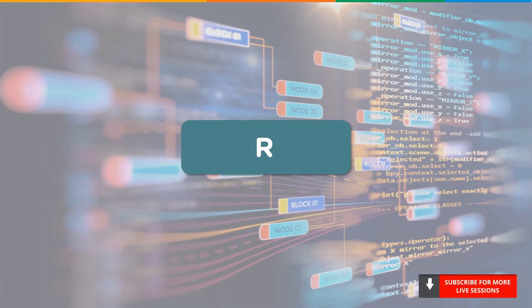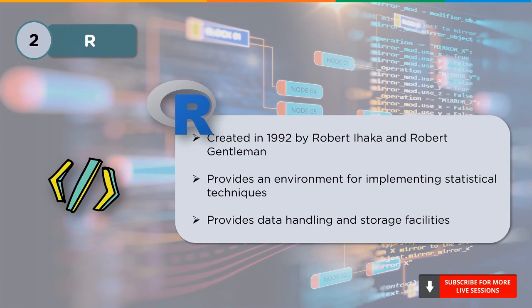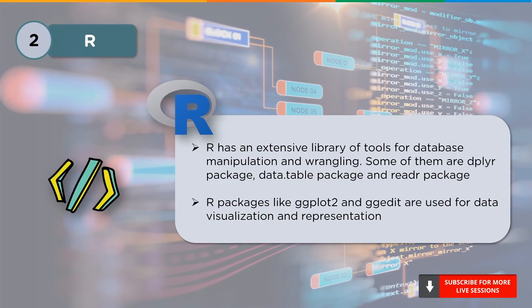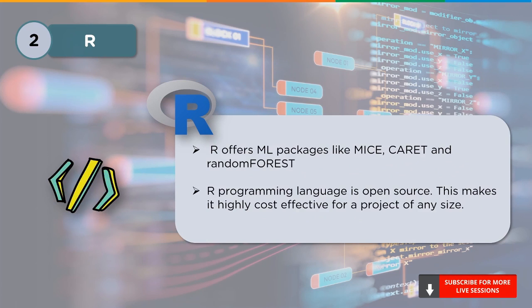At number 2, we have R. It was created in 1992 by Robert E. Haka and Robert Gentleman. It provides an environment for implementing statistical techniques along with data handling and storage features. It offers a wide range of packages and libraries and can be compiled on Unix, Windows, and macOS platforms. R has an extensive library for manipulation and wrangling — some packages include data.table, readr, ggplot2, and ggedit, the last two used for data visualization. Other ML packages include mice, carrot, and random forest. R is open source, making it highly cost-effective for projects of any size.